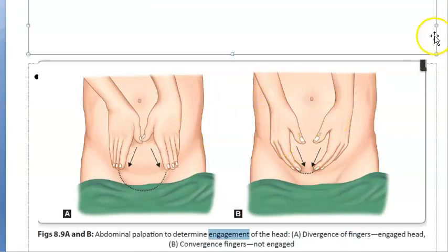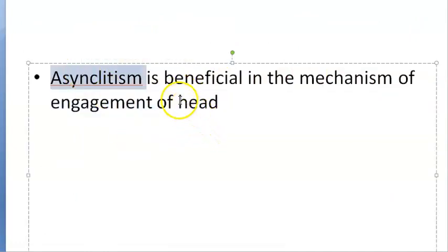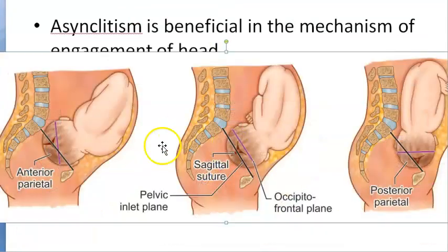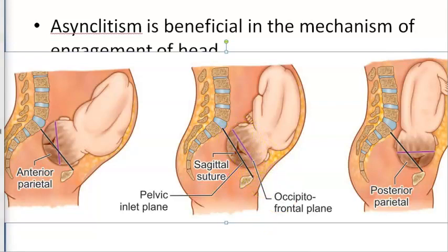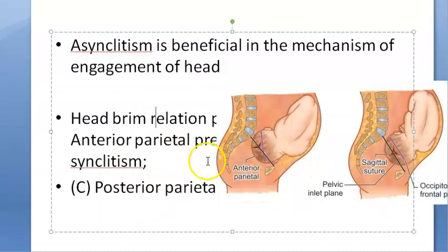Engagement applies not only to cephalic presentation but also to breech — the breech itself can be engaged. Asynclitism is beneficial in the mechanism of engagement. In asynclitism, the sagittal suture does not strictly correspond with the available transverse diameter of the inlet; it is deflected anteriorly toward the pubic symphysis or posteriorly toward the sacral promontory. This deflection helps the head negotiate and pass through the pelvis.